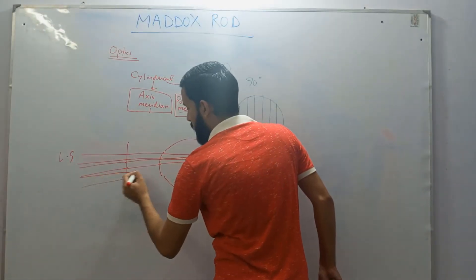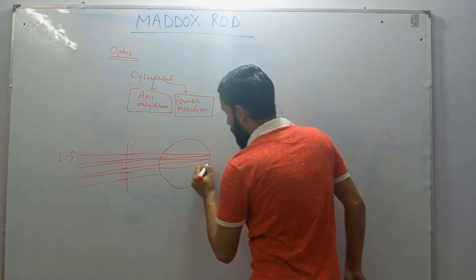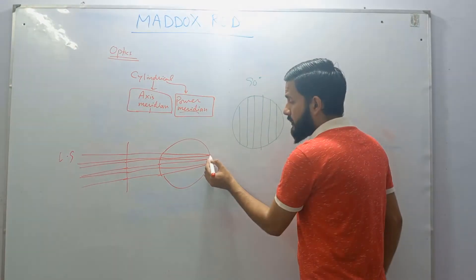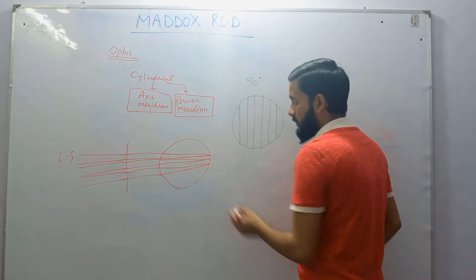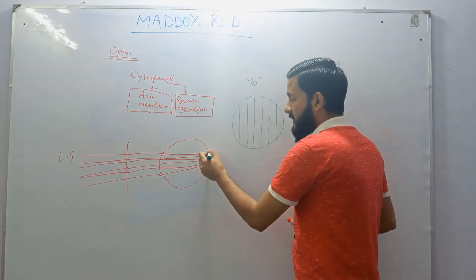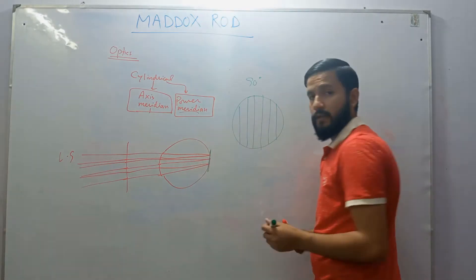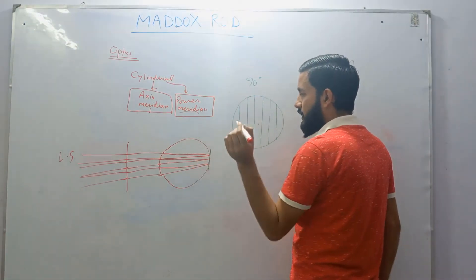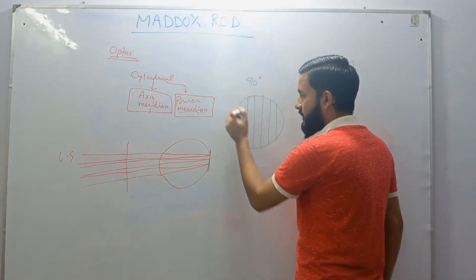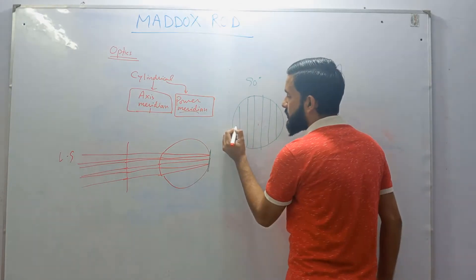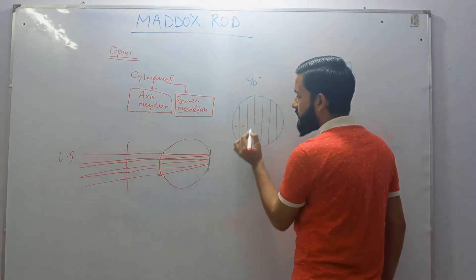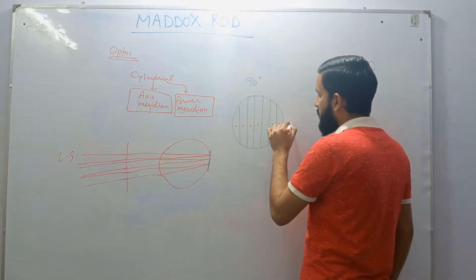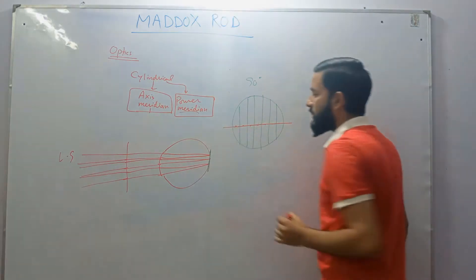From each successive individual cylinder, light rays go undeviated and focus on the retina of the patient, so individual foci are being formed. This is perceived by the patient as a continuous line. A point image is formed on the retina from each cylinder, and the patient interprets it as a complete horizontal line.